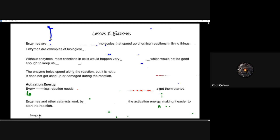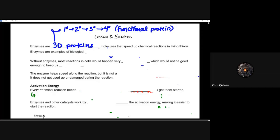Enzymes are what's called 3D proteins. That 3D protein includes primary, secondary, tertiary, and quaternary structures all coming together to form a functional protein — in this case, a functional 3D protein molecule that can help speed up chemical reactions in living things.